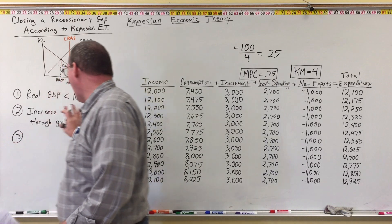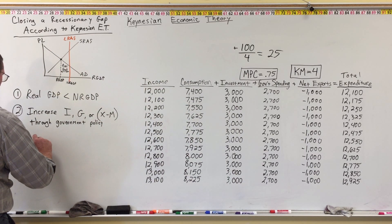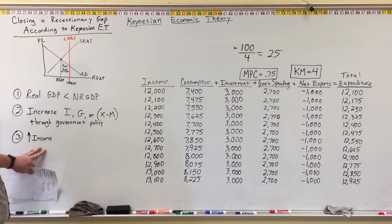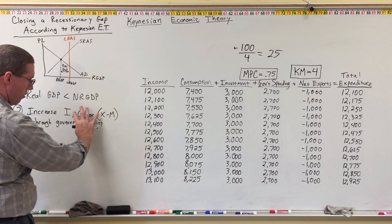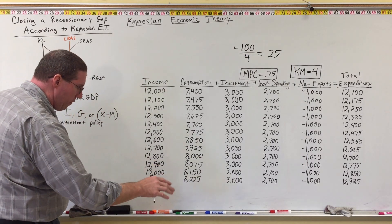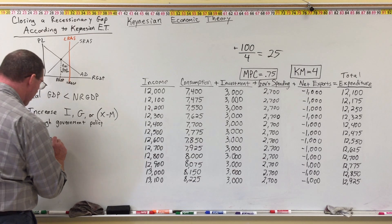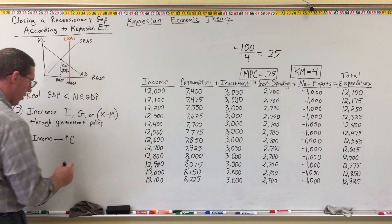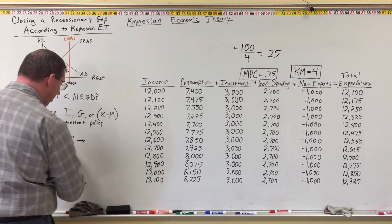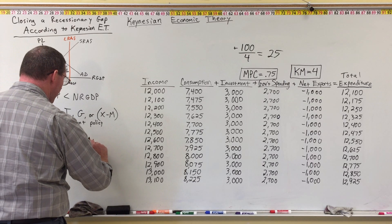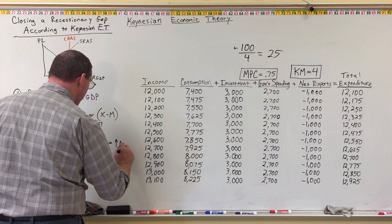When investment, government spending, or net exports increases, there will be an increase in income in the economy. The money spent on these things filters down to employees and owners of businesses and becomes income for them, meaning income in the economy increases. When income increases, that causes consumption to increase, because income affects consumption. When consumption goes up, and since consumption is part of total expenditure, total expenditure goes up.